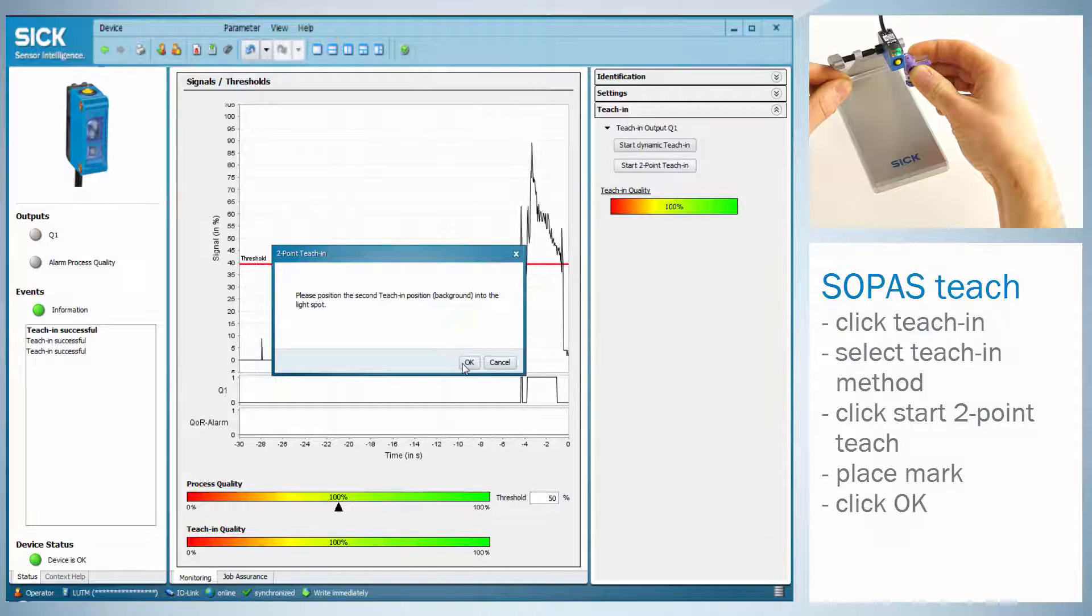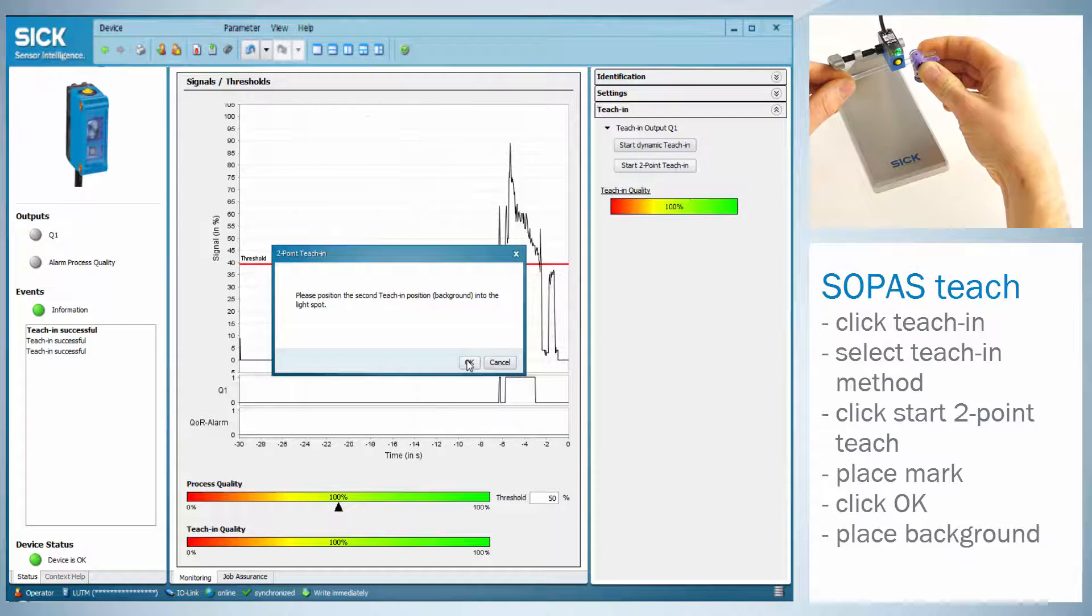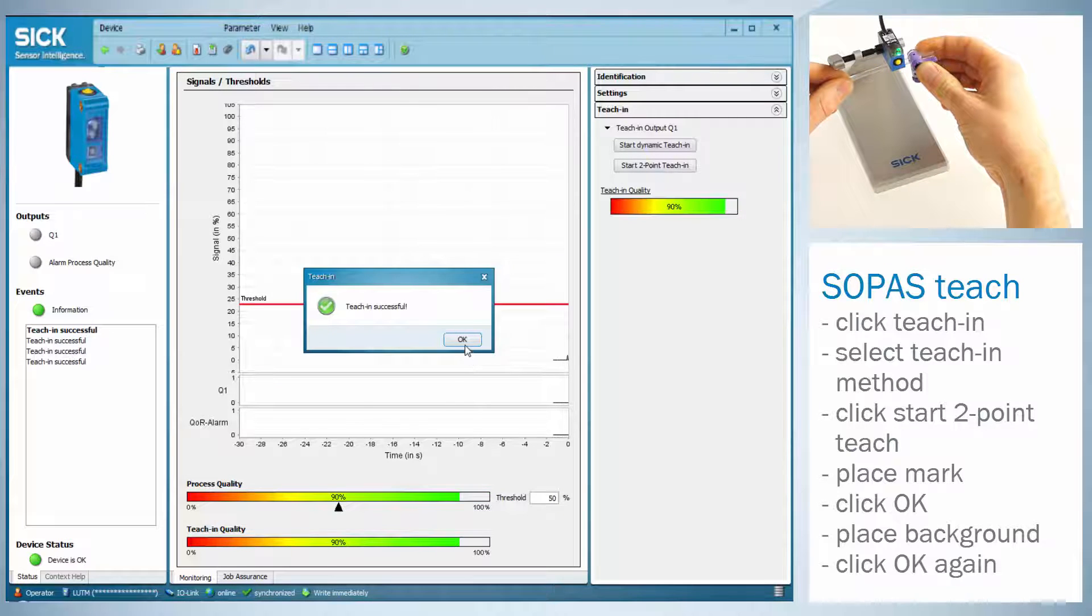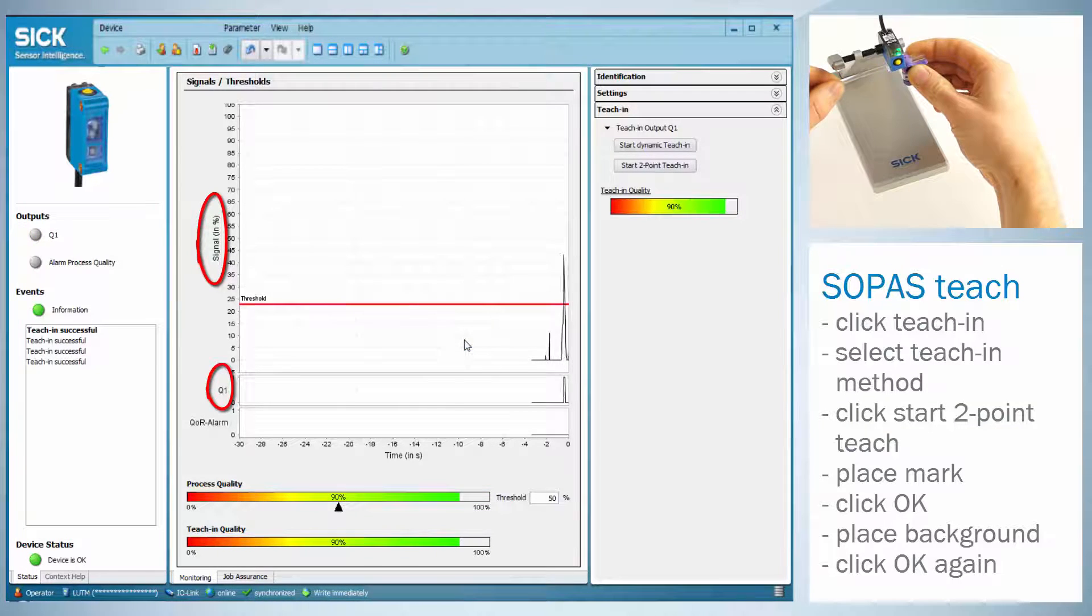Click OK. Now, place the background under the light spot and press OK again. A message confirms the successful teach. The same applies for the dynamic teach.